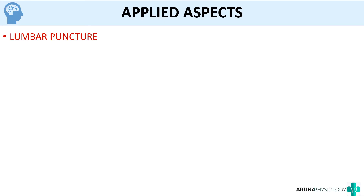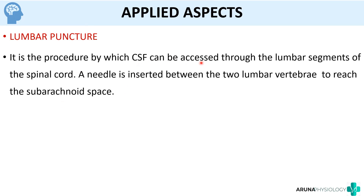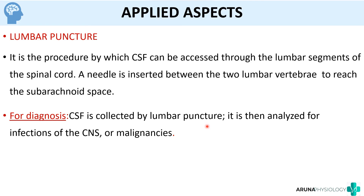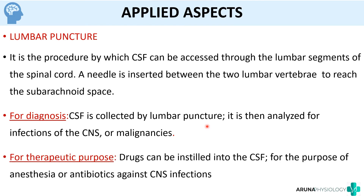The most important applied aspect of CSF is lumbar puncture — a procedure by which CSF is accessed through the lumbar segments of the spinal cord by inserting a needle between the lumbar vertebrae to reach the subarachnoid space. Lumbar puncture has both diagnostic uses (analyzing CSF for infections or malignancies) and therapeutic uses (instilling drugs such as anesthetics or antibiotics into the CSF space).